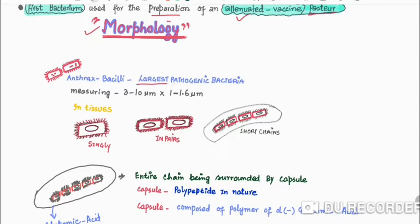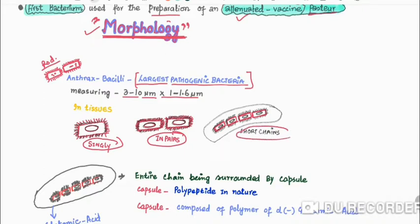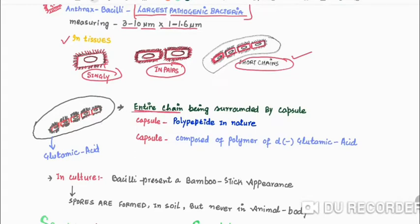The anthrax bacillus measures 3 to 10 micron by 1 to 1.6 micron. In tissues it occurs singly, in pairs, or in short chains. The entire short chain is surrounded by a capsule. In culture it presents a bamboo stick appearance.